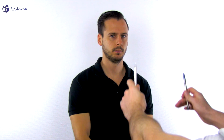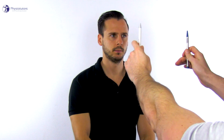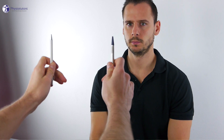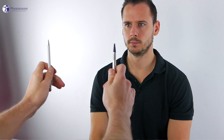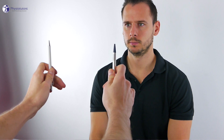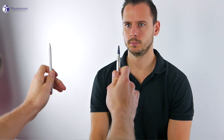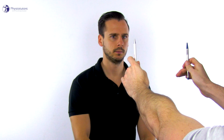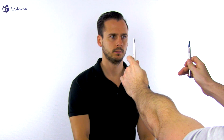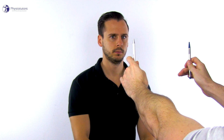Another option is to hold two targets in front of the patient at eye level, at a distance of about three feet or one meter and about 12 inches or 30 centimeters apart. The patient is then instructed to look quickly from one target to the next as quickly as possible.